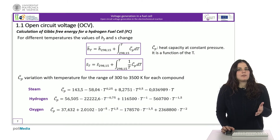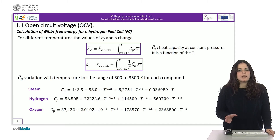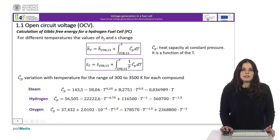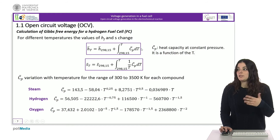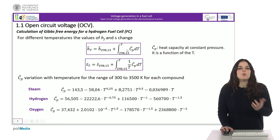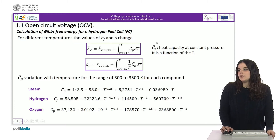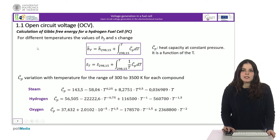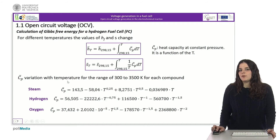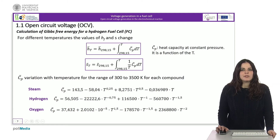If the value is to be calculated for a different temperature, the value of each of the magnitudes for that temperature must first be calculated. To do this, the expressions on the slides are used. As we can see in the case of enthalpy, the value is obtained by integrating the expression of the variation of heat capacity with temperature in the range we want to work, added to the value of the enthalpy at 25 degrees Celsius. For each element of the reaction, this variation is represented in the slide below, with this expression valid for the temperature range between 300 and 3500 degrees Kelvin.